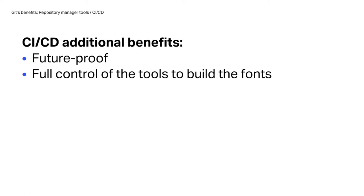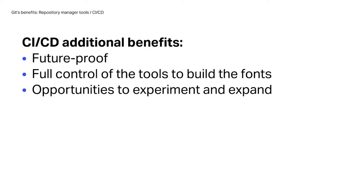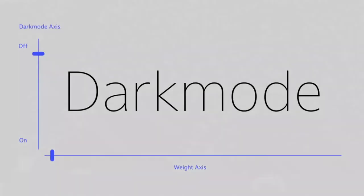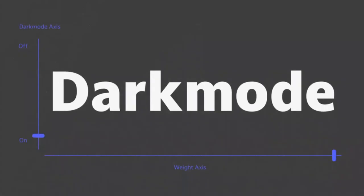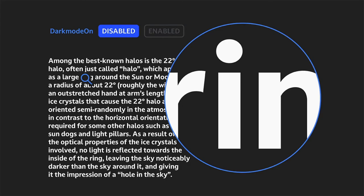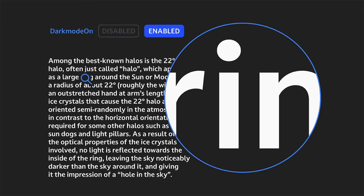Continuous integration also gives us full control as a company over the tools we use to build fonts in ways that font development softwares don't allow, and creates opportunities to experiment — writing scripts to generate masters, instances, or final fonts without manual work, customizing what goes into tables, or adding new functionality. A nice example is Dark Mode, a library project and variable font with a weight axis and a dark mode axis. The dark mode axis was built programmatically using only the drawn instances of the weights, and works essentially as a grade axis, offering optical adjustment of the outlines when switching between normal and inverse display modes.